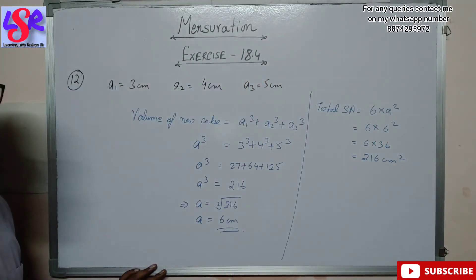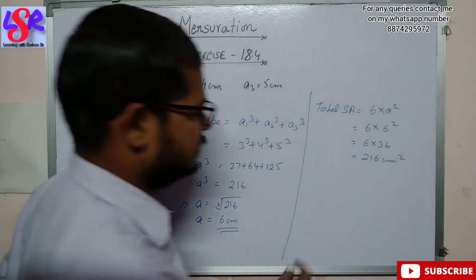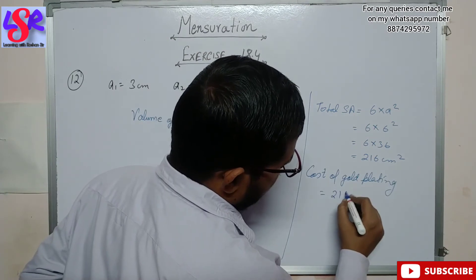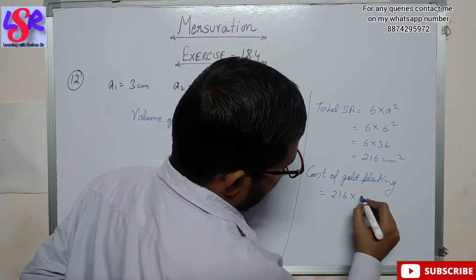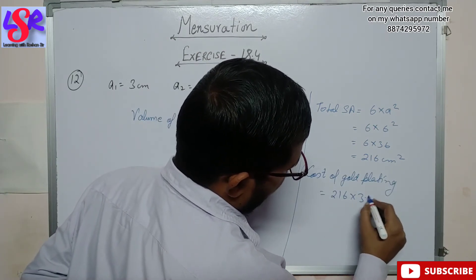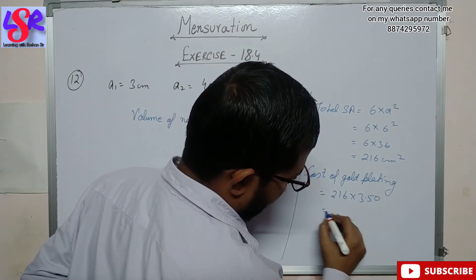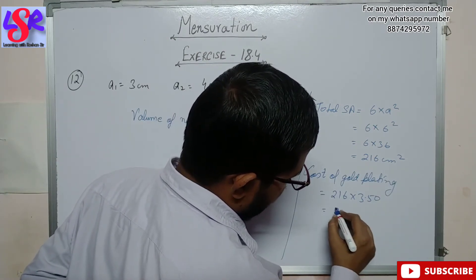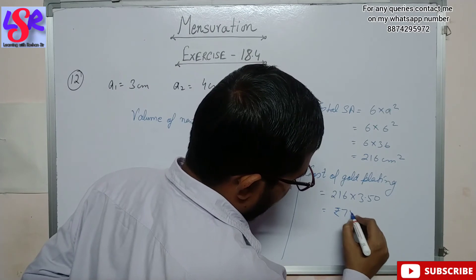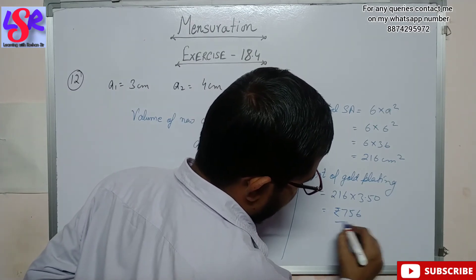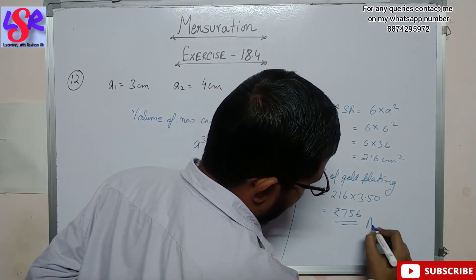The cost of gold plating is 216 × 3.50, which equals rupees 756 as the answer.